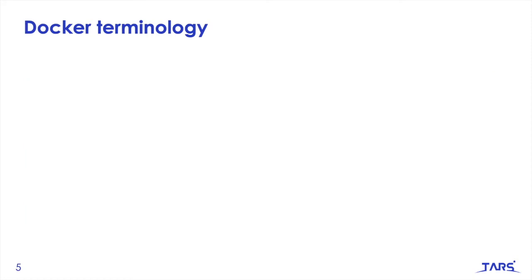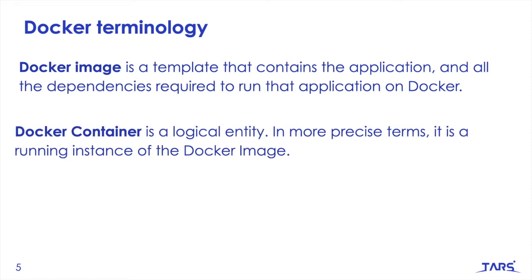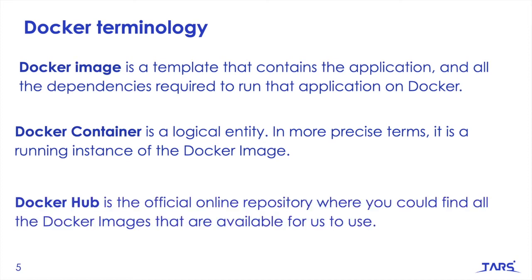Just to summarize and remember the terminology we mentioned: we have a Docker image, which is a template that contains the application and all the dependencies required to run the application on Docker. We also have a Docker container, which is a logical entity — basically a running instance of a Docker image. And we have Docker Hub, which is the official online repository where you can find all the Docker images that are available for us to use. We are going to use all these terminologies when we deploy TARS on Docker.